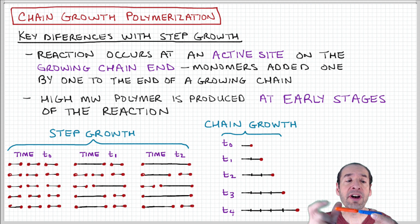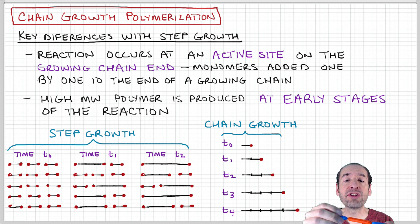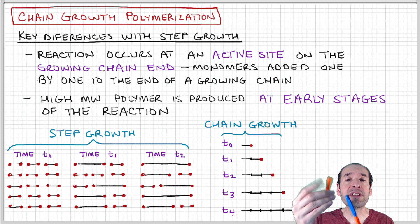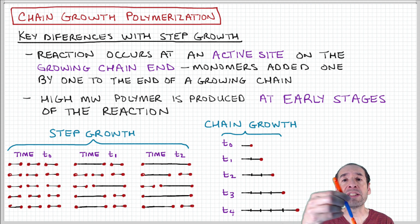Additional monomer units are then added, so monomers are added one by one to the end of the chain, and the reactive site is transferred to the chain end.